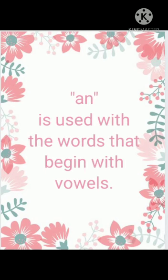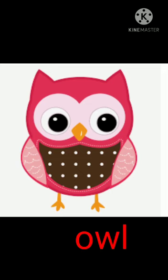AN is used with the words that begin with vowels. Now look at some examples. This is a picture of owl. The starting letter of owl is O, which is a vowel. So we will use AN — an owl.